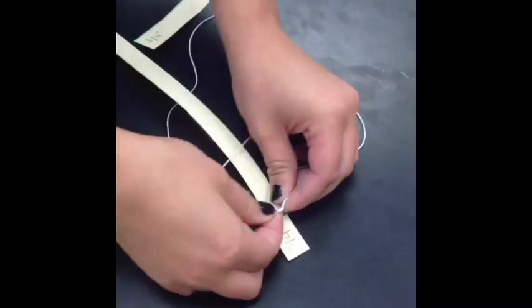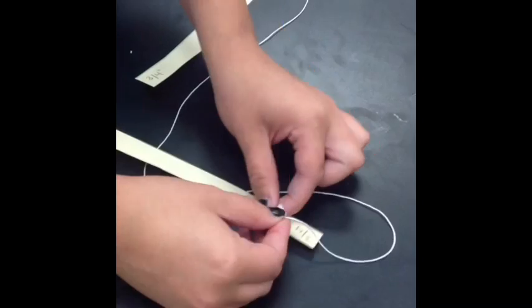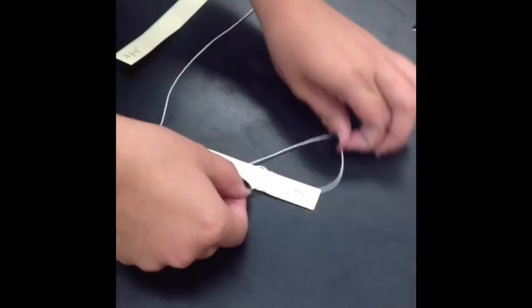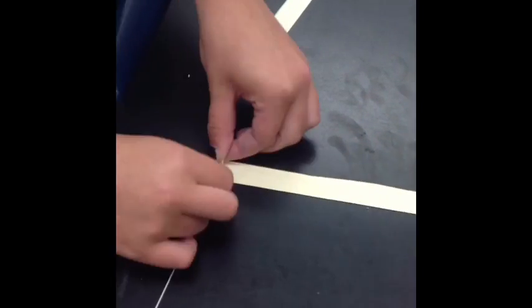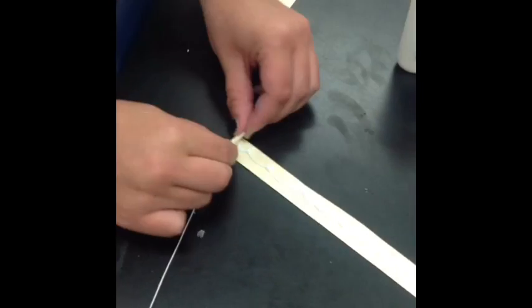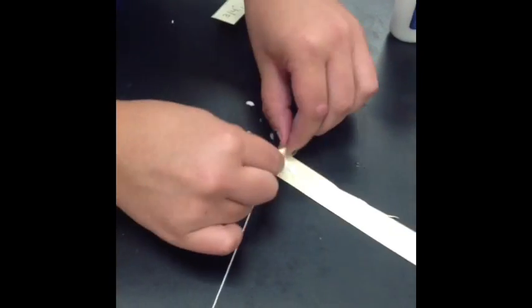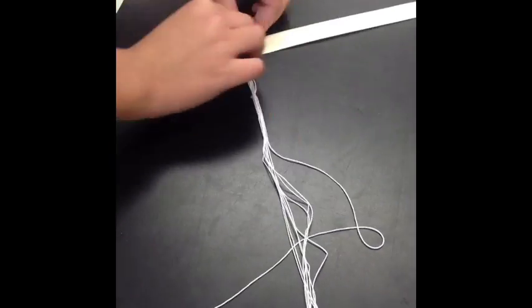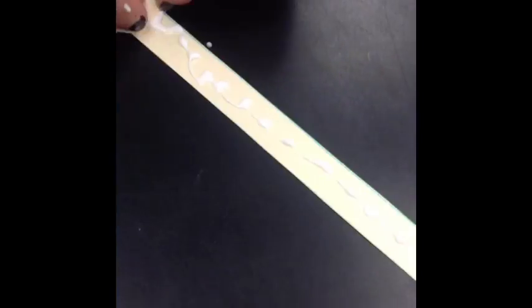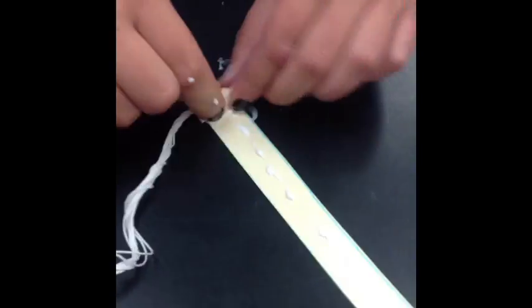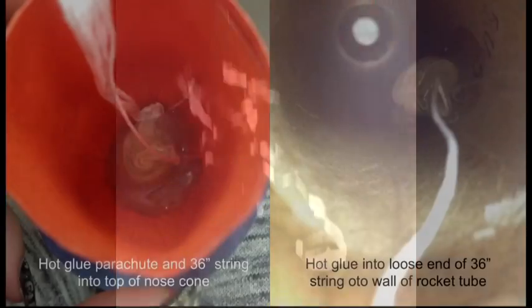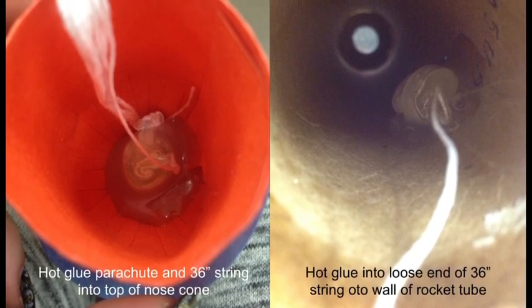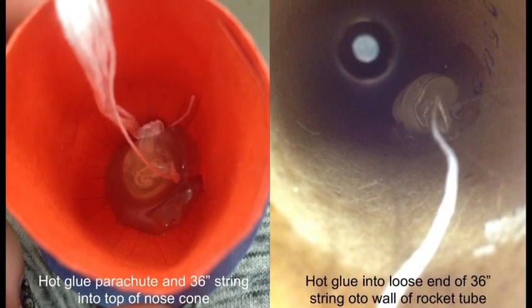You're going to tie and attach the nug to the end of the 36 inch string. Next tie and attach the nug to the bottom of the parachute. Now you're going to have your teacher hot glue your nugs into the top of your nose cone and into the rocket tube.